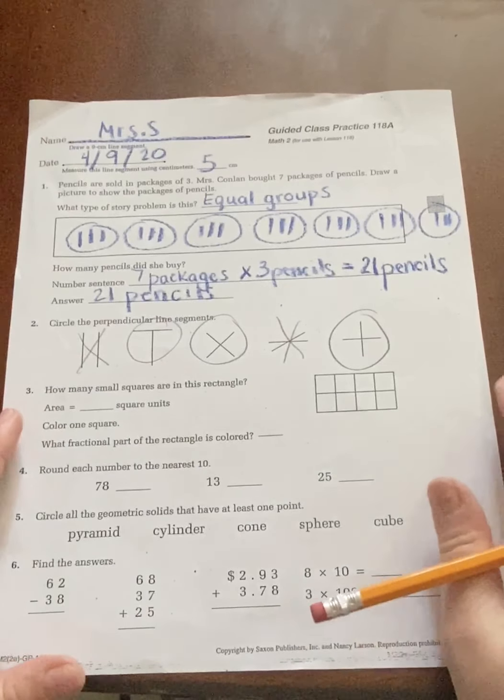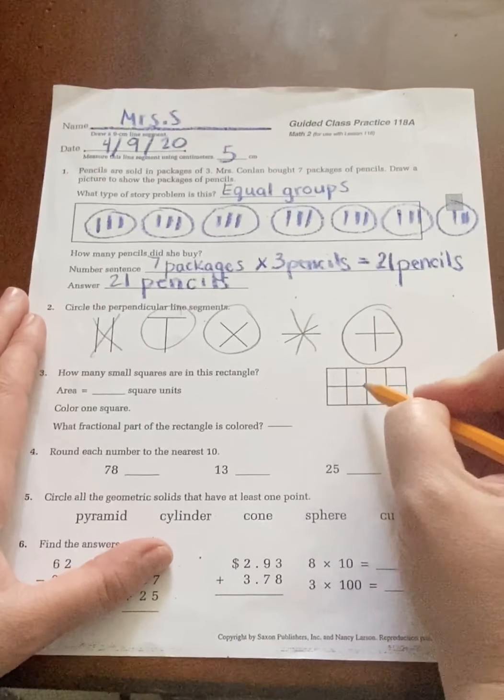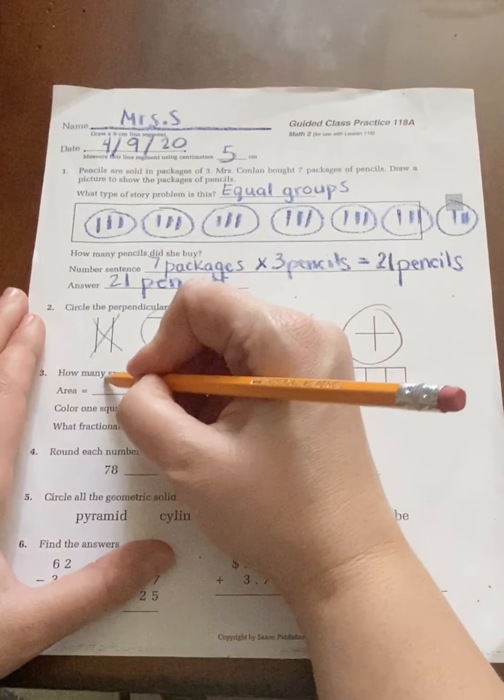Number three. How many small squares are in this rectangle? So let's count. One, two, three, four, five, six, seven, eight squares.